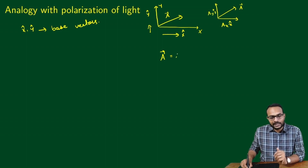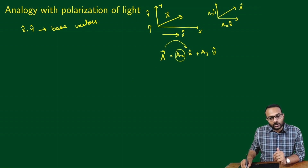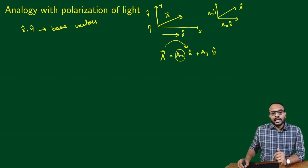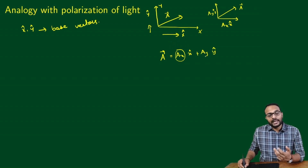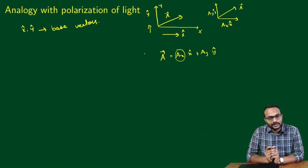So vector A can be written as AX X̂ plus AY Ŷ. AX is called the component of vector A along the X direction, and AY is called the component of vector A along the Y direction. In this case, vector A has components along both X and Y directions.